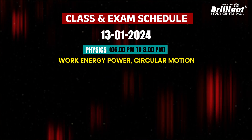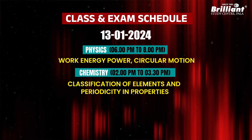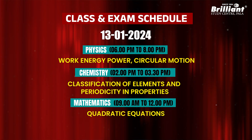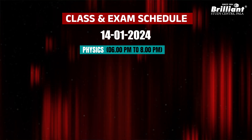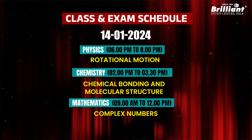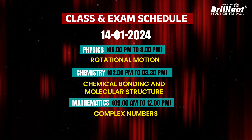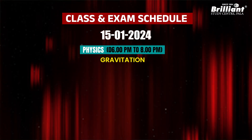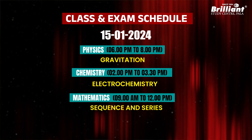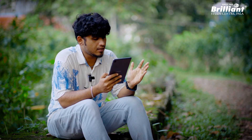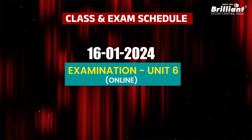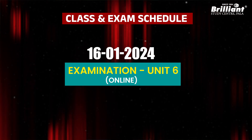In Unit 6, we have the topical elements of Classification of Elements and Periodicity in Properties, and Mathematics — Quadratic Equations. We also cover Chemistry — Chemical Bonding and Molecular Structure, and Mathematics — Complex Numbers. Physics — Gravitation, Chemistry — Electrochemistry, and Mathematics — Sequences and Series. We will have completed the live class of Unit 6, which is the last unit.